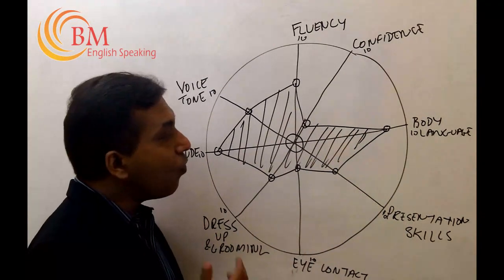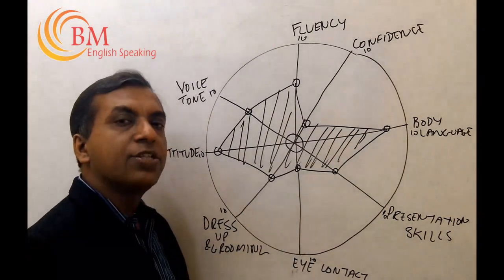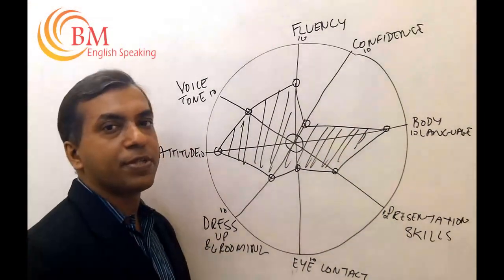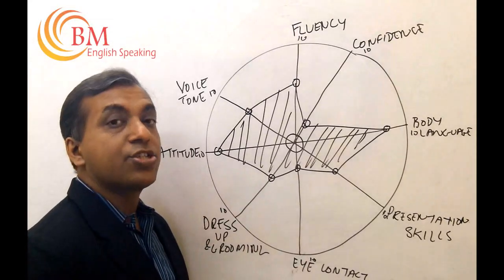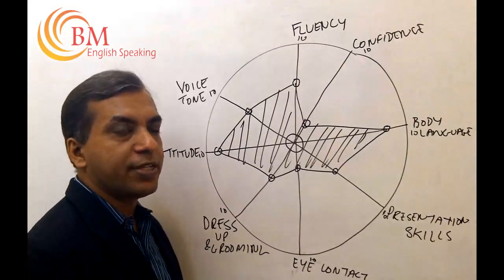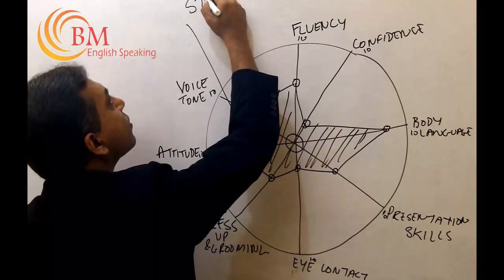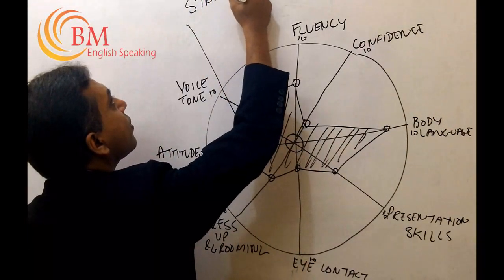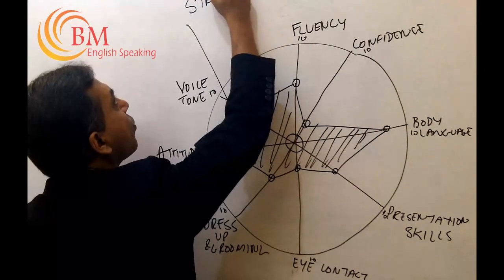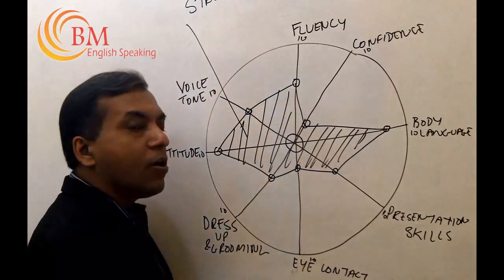Now what is this shaded area? This shaded area reflects your personality. The shaded area reflects your strengths of your personality. So let's name it strengths. You can call it my strengths.